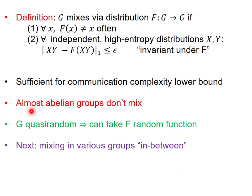So what can we show? We can show again that almost abelian groups don't mix even in this sense. On the other hand, if the group G is quasi-random, you do mix and in fact you can take F to be a random function. And in our case for our groups in-between you can get some F which are non-trivial although they're not completely random.